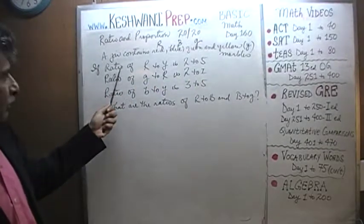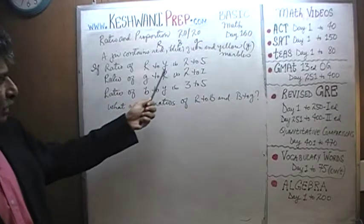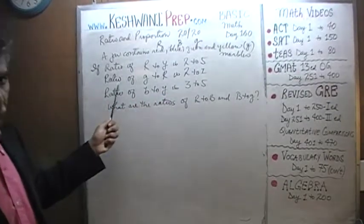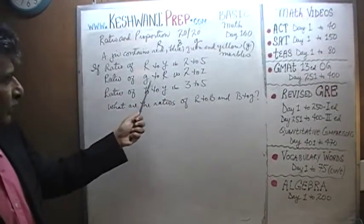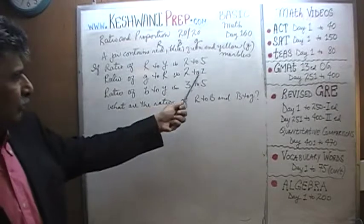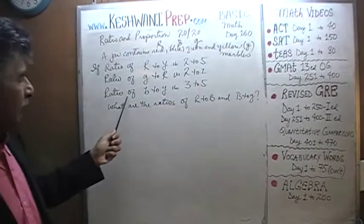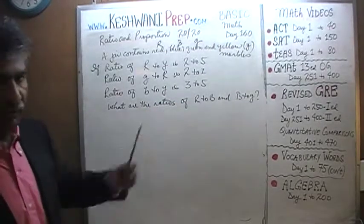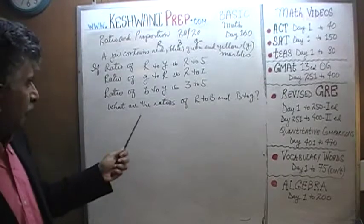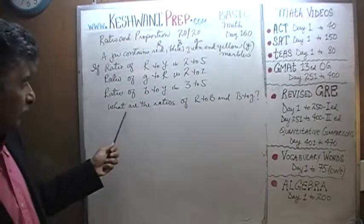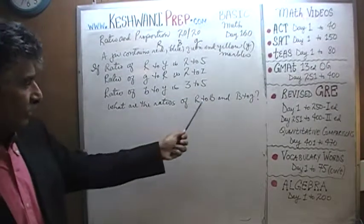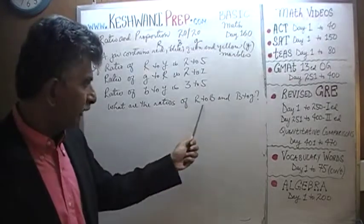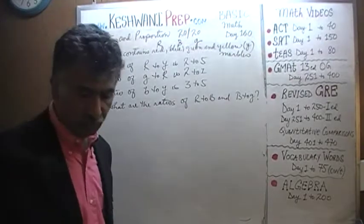We are told that the ratio of red to yellow is 2 to 5. We are further told that the ratio of green to red is 2 to 1. And finally, we are told that the ratio of blue to yellow is 3 to 5. We are being asked to figure out two ratios: what are the ratios of red to blue, and blue to green?